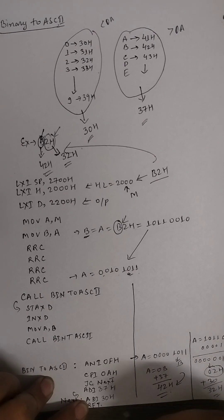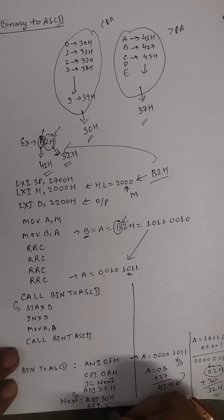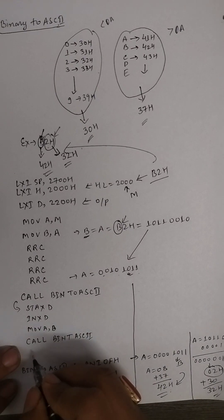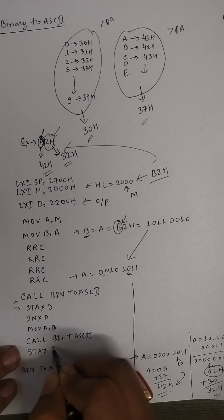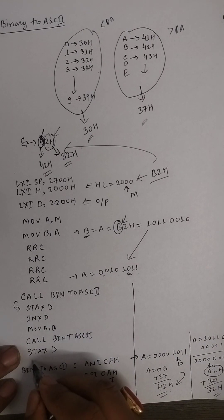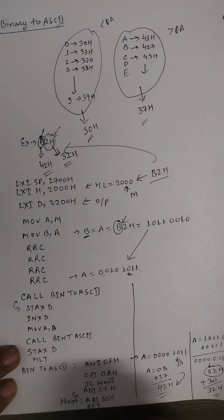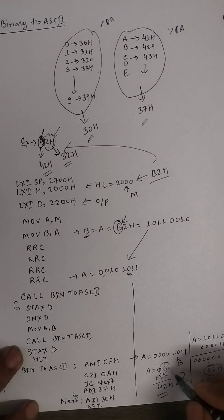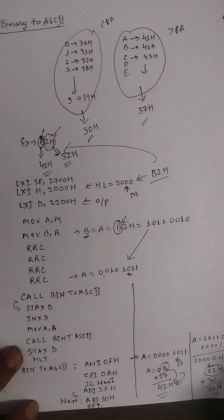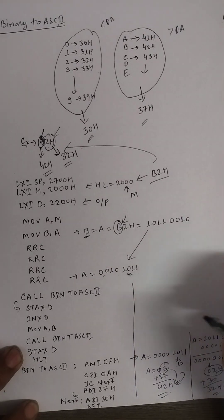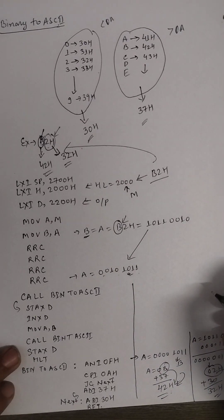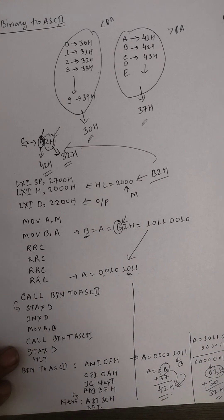The subroutine returns to the main program and I store the value 32H into the DE register pair location. In this way, B converts to 42H and 2 converts to 32H. This is how you convert a binary number into ASCII code. Thank you.